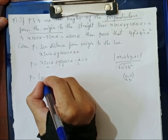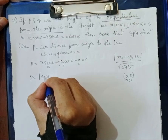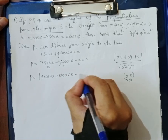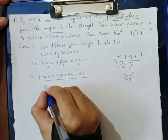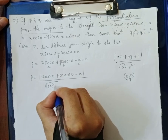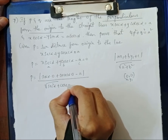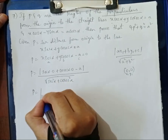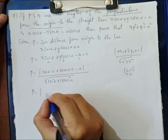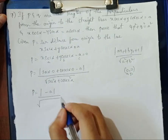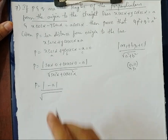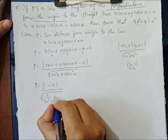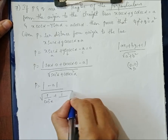Substituting into the formula: p = |sec(α)·0 + cosec(α)·0 − a| / √(sec²(α) + cosec²(α)), which simplifies to |−a| / √(sec²(α) + cosec²(α)). Converting to sine and cosine: sec²(α) = 1/cos²(α) and cosec²(α) = 1/sin²(α).